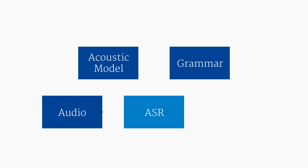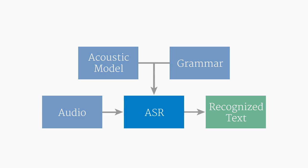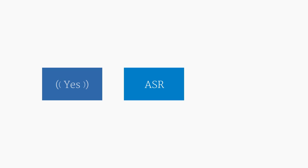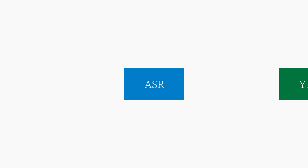Finally, after the audio is compared to the acoustic model, using the grammar as a constraint on the search, the ASR performs the recognition and outputs the recognized text. In the simplest case, the output is literally what the user said. If a user says "yes," the ASR can return the word "yes" to the speech application.